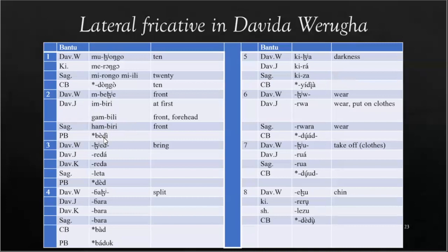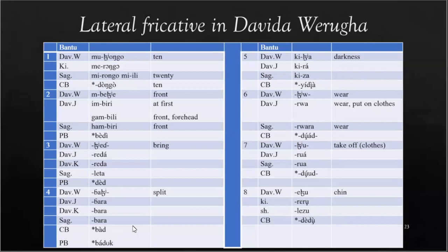When we look at Proto-Bantu, it's Da. It either continues as Ra, La, or a lateral fricative. For the word for bring, we have the lateral fricative, a trill, and a lateral approximant all corresponding to Da. When we look at the environment where they occur, it seems really diverse, but there is an environment where the direct reflexes are assumed before close vowels. This is the normal environment where they are expected. Otherwise, these are indirect reflexes.